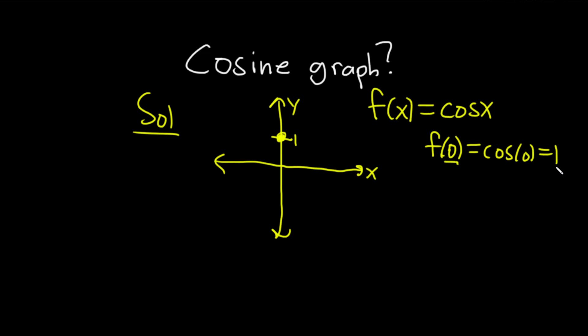This means that when x is equal to 0, y is equal to 1. And so we have a point here. And then it comes down like this and it crosses at π/2 and it comes back up like this and it just keeps doing the same thing.